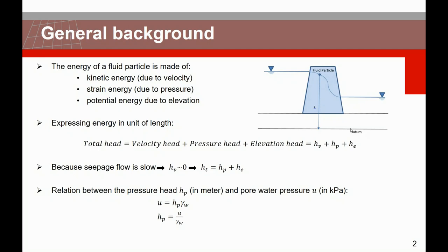If we express this energy in a unit of length we get the total head, which is the sum of the velocity head, the pressure head, and the elevation head — named HV, HP, and HE. The pressure head depends on water pressure in soil pores and the elevation head depends on the location of the datum z. Since seepage flow is a slow process, we can assume that the velocity head is null, so the total head is basically the sum of the pressure head and the elevation head.